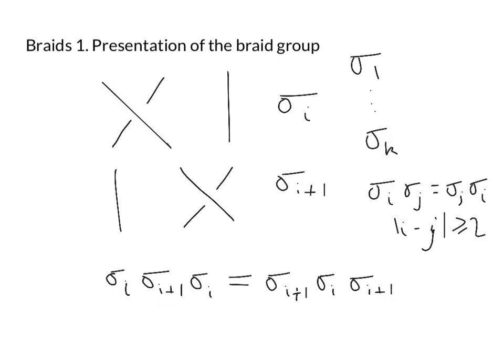And the hard part here is of course showing that these relations are sufficient for this to be a presentation of the braid group, so we don't need any more relations. So that's called the Zarisky van Kampen theorem. I'm not going to explain it now, maybe I'll explain it in a later video. But for now, that's enough about braids.